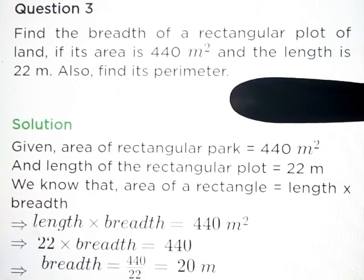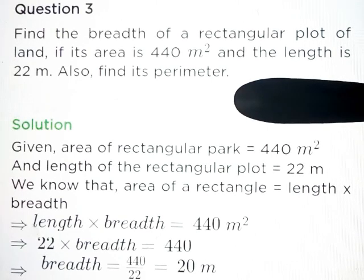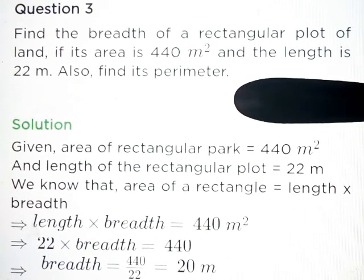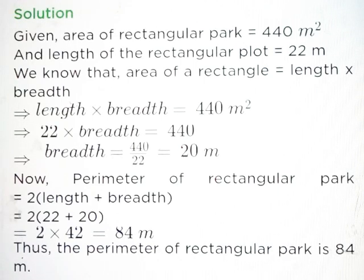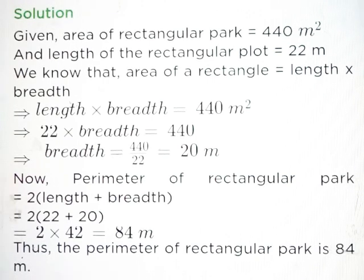Question number 3. Find the breadth of a rectangular plot of land if its area is 440 meter square and the length is 22 meter. Given: area of rectangular plot is equal to 440 meter square and length of the rectangular plot is equal to 22 meter. We know that area of a rectangle is equal to length into breadth. So 22 into breadth equals 440, breadth equals 440 upon 22, that is equal to 20 meter.